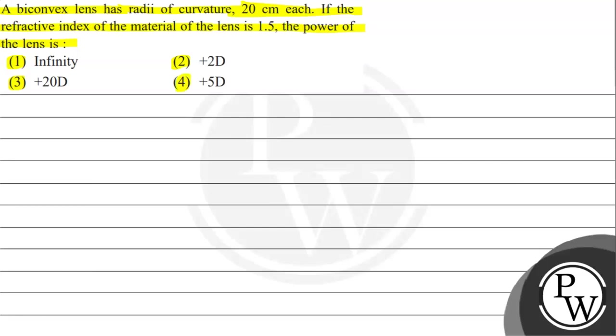So to understand this question we need to understand the concept of lens maker formula. According to lens maker formula, we can write the reciprocal of focal length, that is 1 upon f, equals to refractive index of lens upon refractive index of medium minus 1 into 1 upon r1 minus 1 upon r2. So this is the formula that we use.